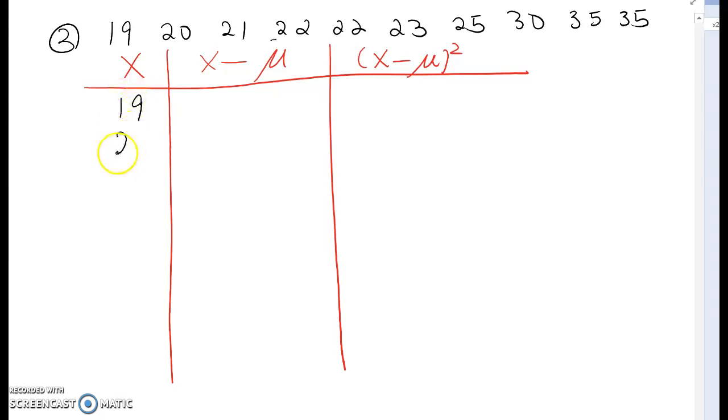So, 19, 20, 21, 22, 22, 23, 25, 30, 35, and 35.